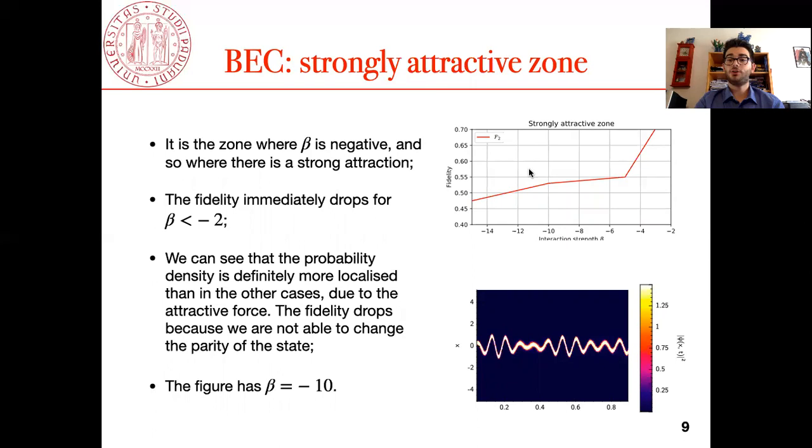At the end we'll see the strongly attractive zone, and we see that as soon as we move away from zero the fidelity drops. This is because, as we can see here, the probability density is really more localized than in the other case, and so the state is not able to change the parity from the even parity of the ground state to the odd parity of the first excited. Here the beta is minus 10 for this plot.